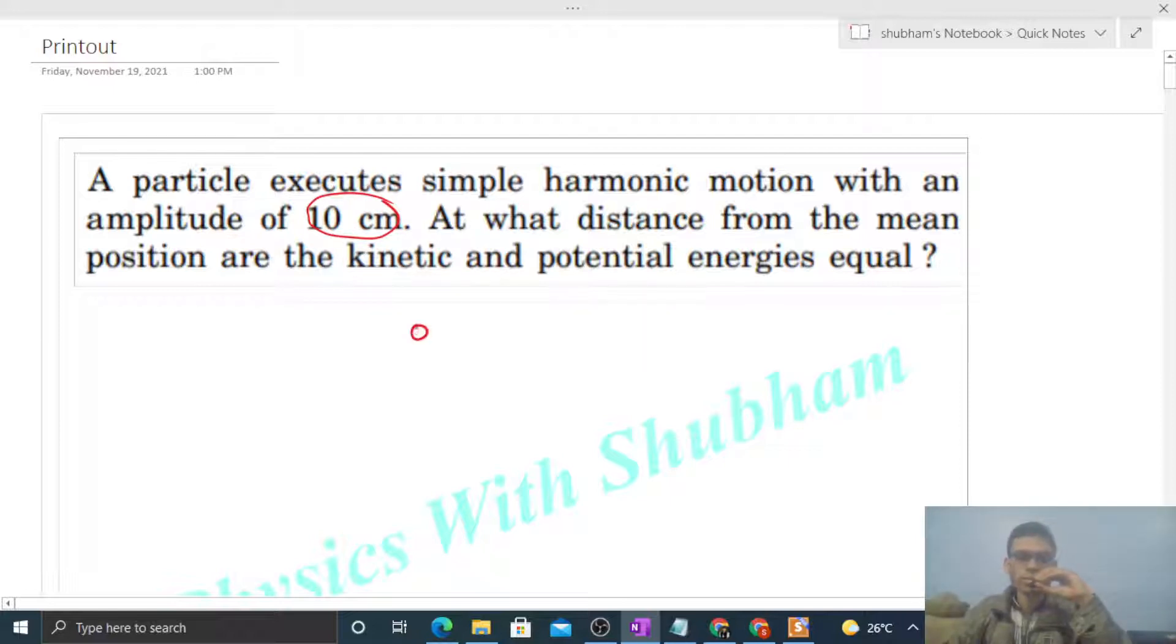So we have a particle that does SHM, something like this. x equals zero is the mean position and amplitude is 10 centimeters, something like this. So we have to find out the displacement of the particle from the mean position.